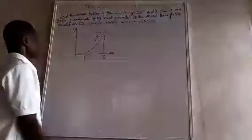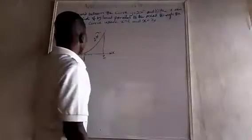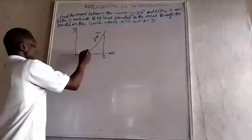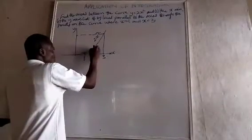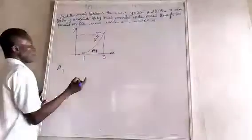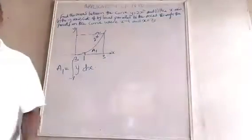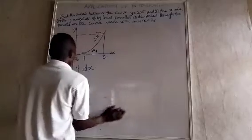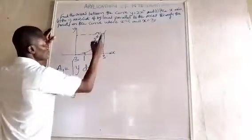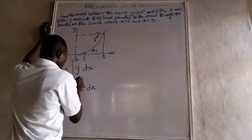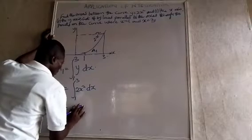There is a way you handle this. Between the curve and the x-axis, cut off by lines parallel to the axis through the points on the curve, they are x equals 1 and x equals 3. So they are telling you it is from here to here. Let's call this area A1. A1 is going to be the integral from 1 to 3 of y, which is 2x squared, giving us 2x squared over 3.